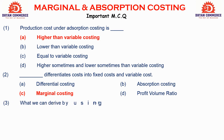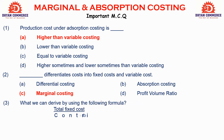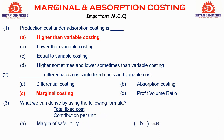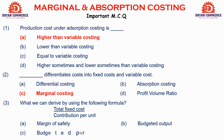MCQ 3 (very important): What can we derive using the formula Total Fixed Cost ÷ Contribution per unit? Options: A: Margin of Safety, B: Budgeted Output, C: Budgeted Profit, D: Break-even Output. Answer: D — Break-even Output. Dividing total fixed cost by contribution per unit gives break-even output.